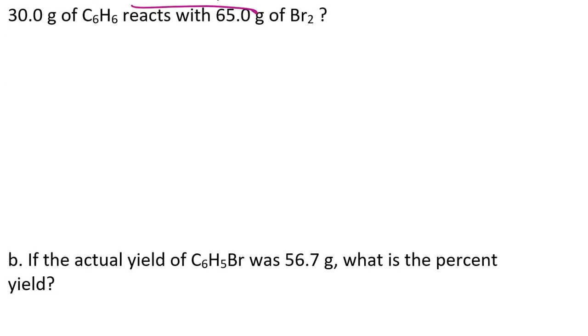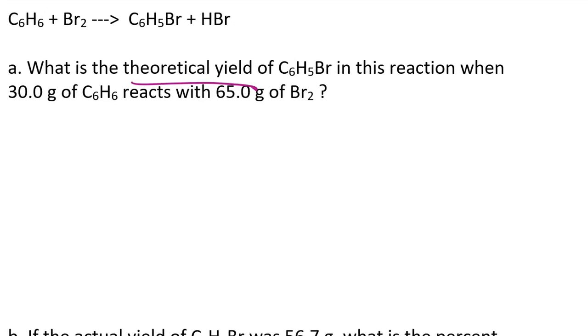And so that amount that we truly get when a reaction occurs is what we call the actual yield. Let's actually have an example of how I can calculate the theoretical yield, as we have been to this point, and then how I can take that theoretical yield, compare it to an actual yield, to calculate a percentage of the theoretical yield that I actually got from the chemical reaction. So let's begin by taking a look at this question in part A.